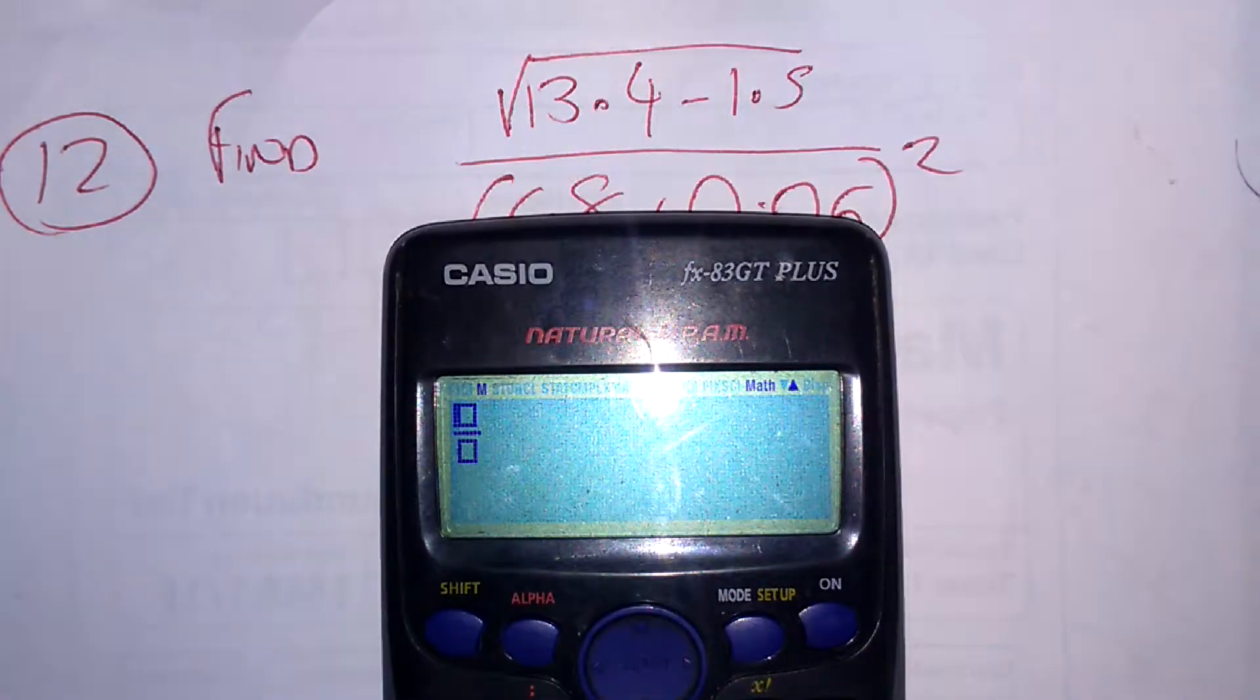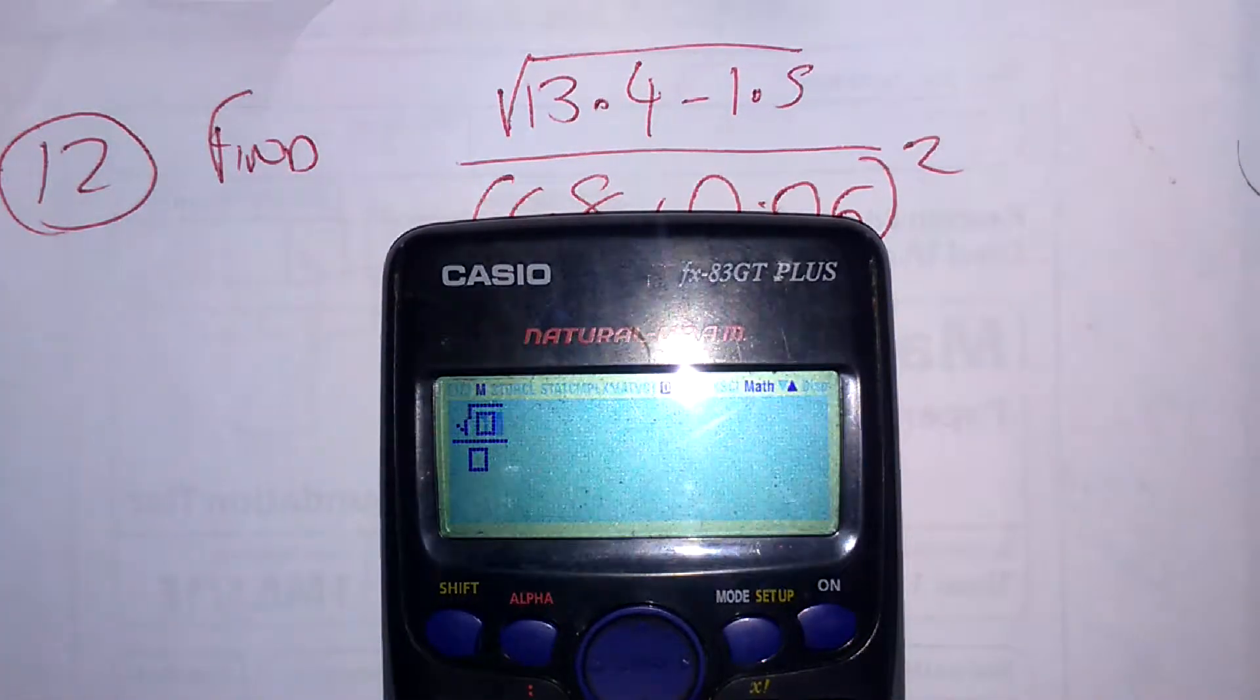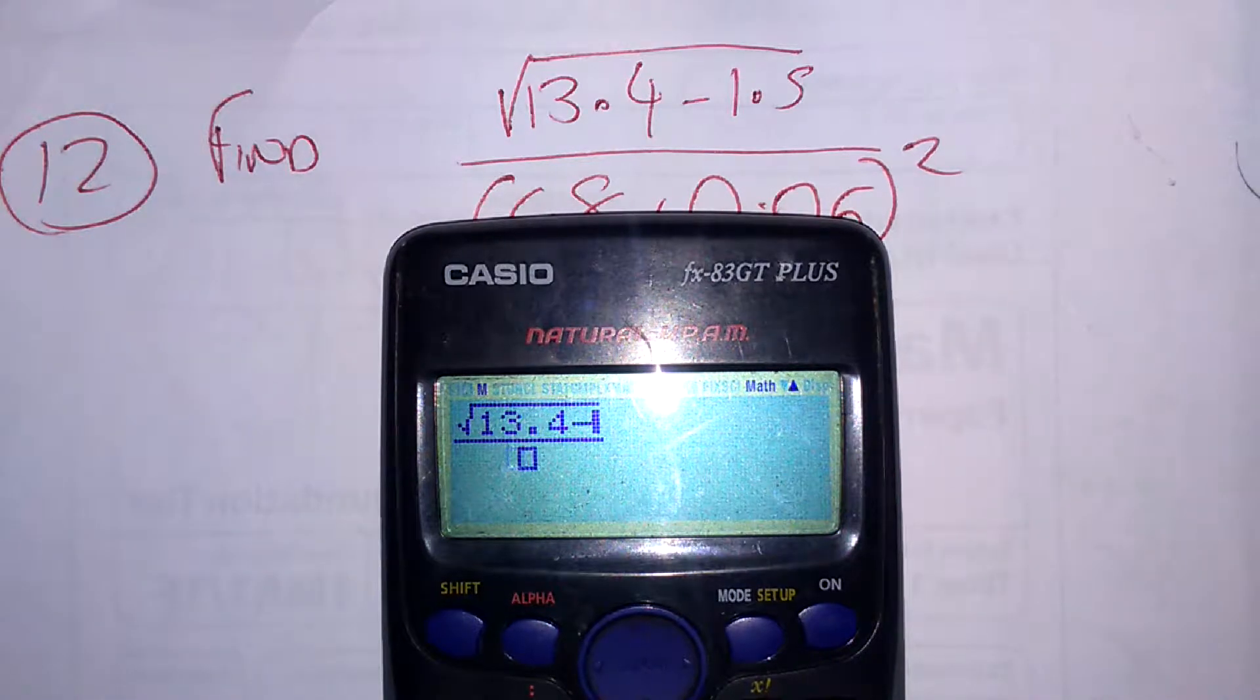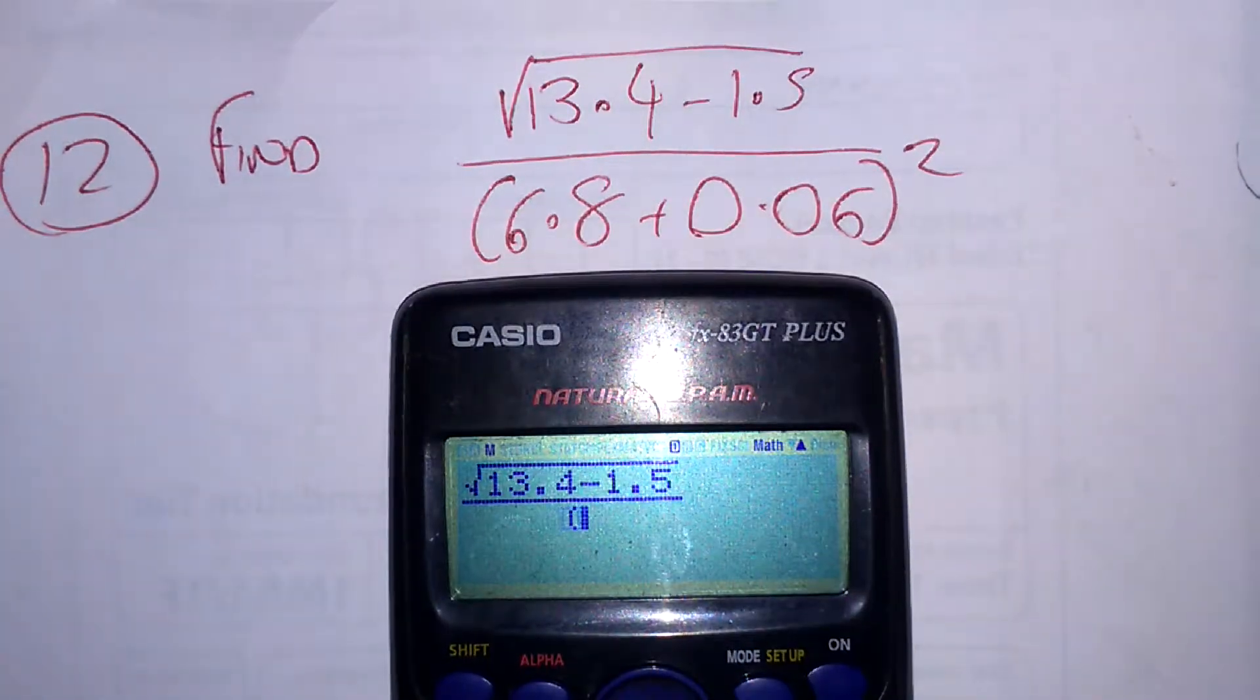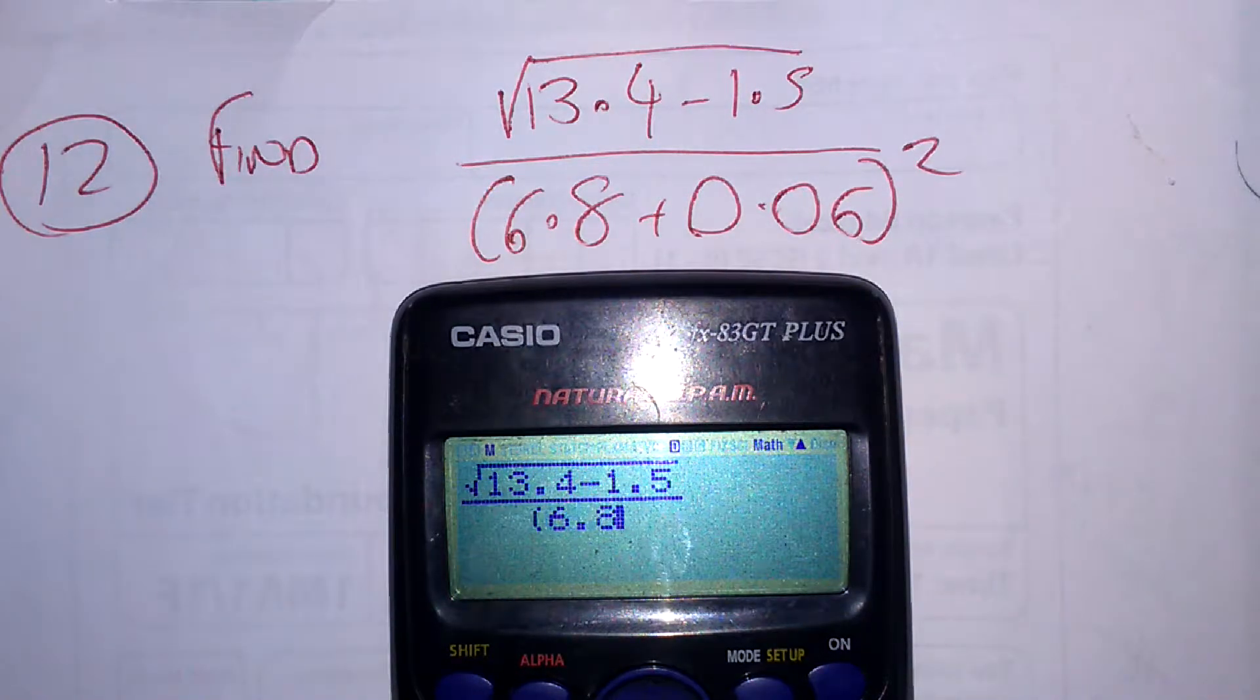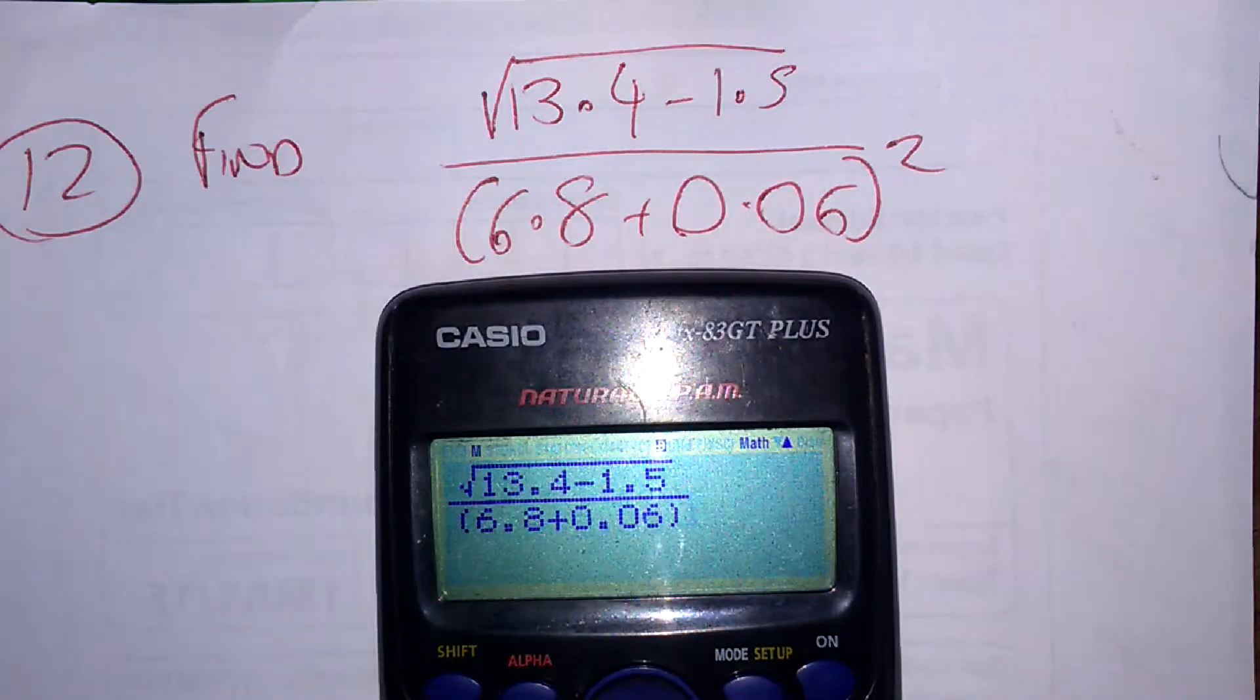I'm going to use my fraction button. Square root of 13.4 minus 1.5, that looks exactly the same. Let's go down to the denominator: brackets, 6.8 plus 0.06, brackets, squared.